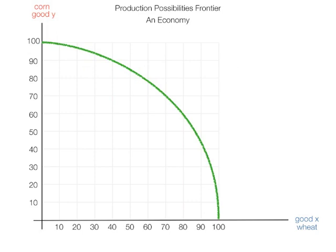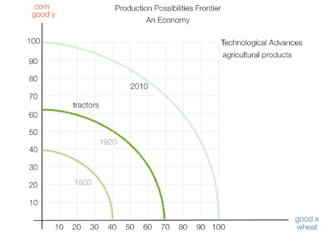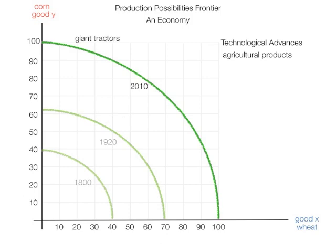Now, imagine the agricultural economy in 2010. Think of all the technological advances for agricultural products. In 1800, the production possibilities frontier was just about here — horses pulled plows, and agriculture was limited technologically. By 1920, the whole curve shifts out because we have tractors, irrigation systems, and sophisticated agriculture, producing more. The frontier shifted out. And by 2010, we have giant tractors, fertilizers, pesticides, a lot of science, and sophisticated irrigation systems. So we see the curve has shifted out since 1800.